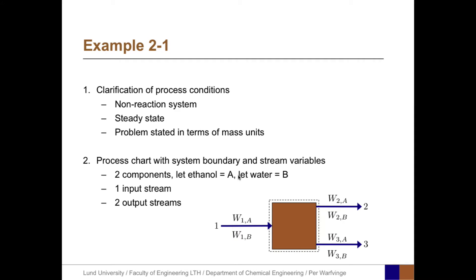The second step is to draw the process chart with clear system boundaries and all the stream variables. Here we have two components — let ethanol be component A and water be component B. There is one input stream and two output streams.